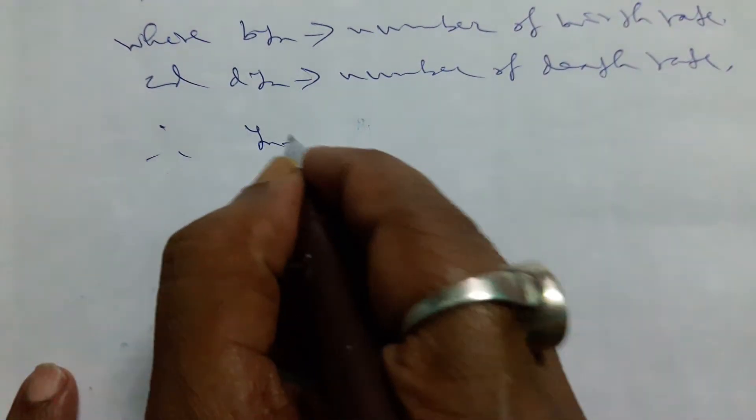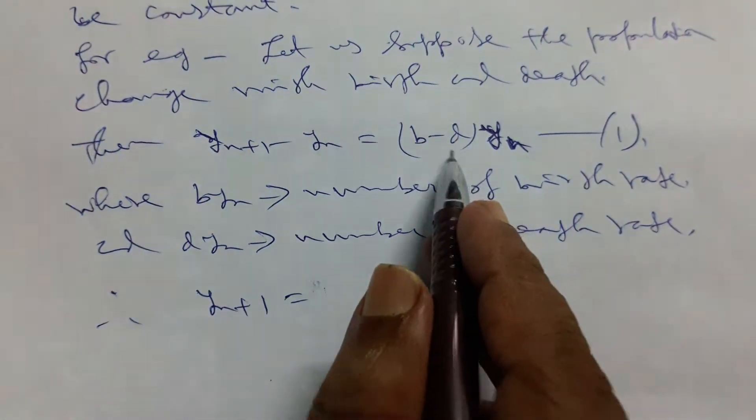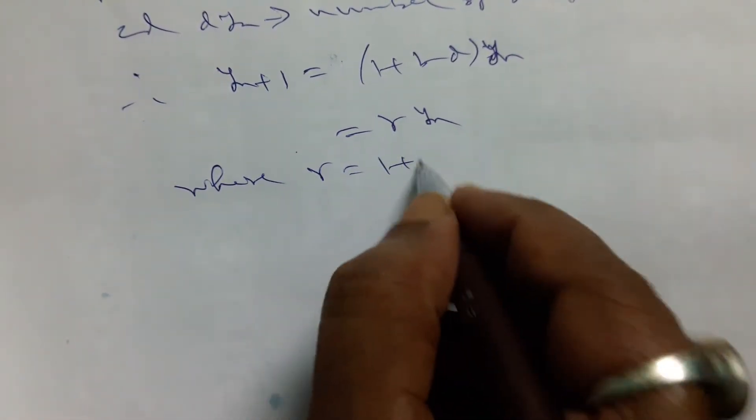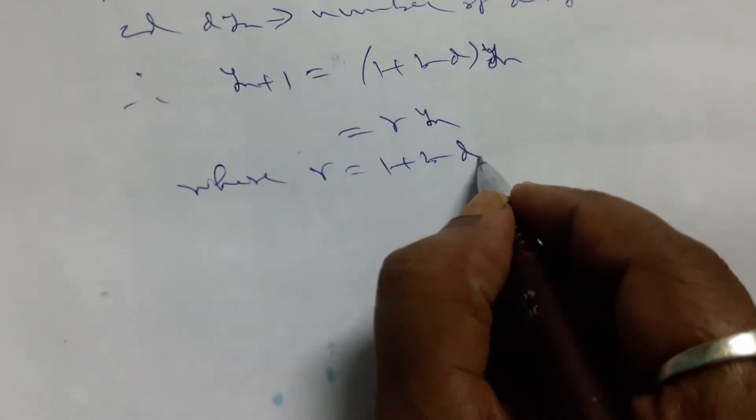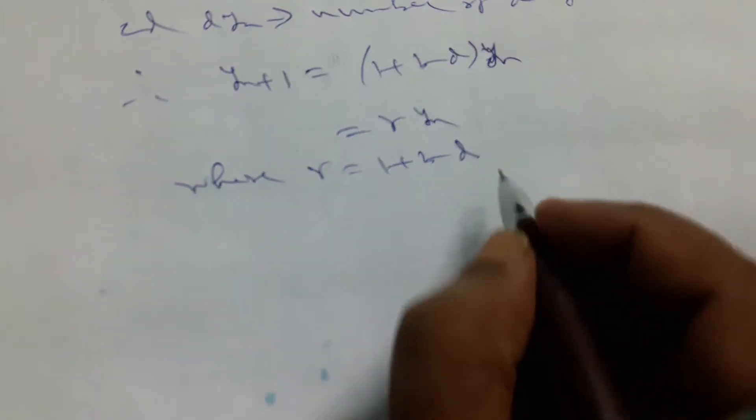Therefore we find y_{n+1} equals 1 plus b minus d into y_n. If we take it as r*y_n, where r equals 1 plus b minus d, and this r is a parameter of the first order linear homogeneous equation.